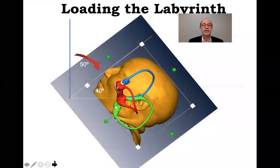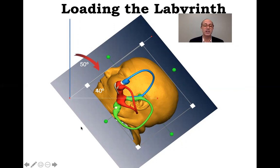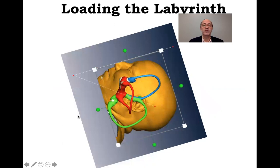In order to get BPPV, we need to load the otoliths into the labyrinth. To get from the utricle into the posterior canal, we have to tilt backwards and the otoliths have to traverse the common crus. Because there is a 40-degree posterior angulation of the common crus, we have to lie down at least 50 degrees for the common crus to become perfectly horizontal. If we lie down farther than 50 degrees, the otoliths can proceed into the posterior canal, and when we rise they become trapped.